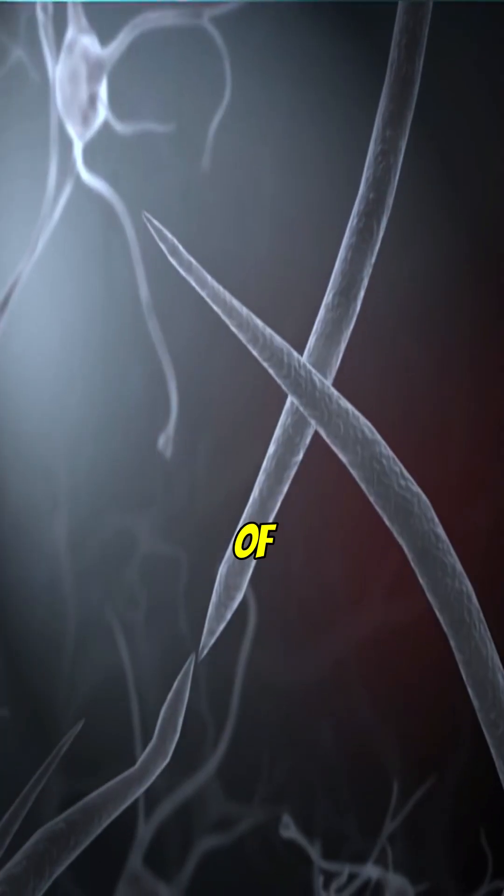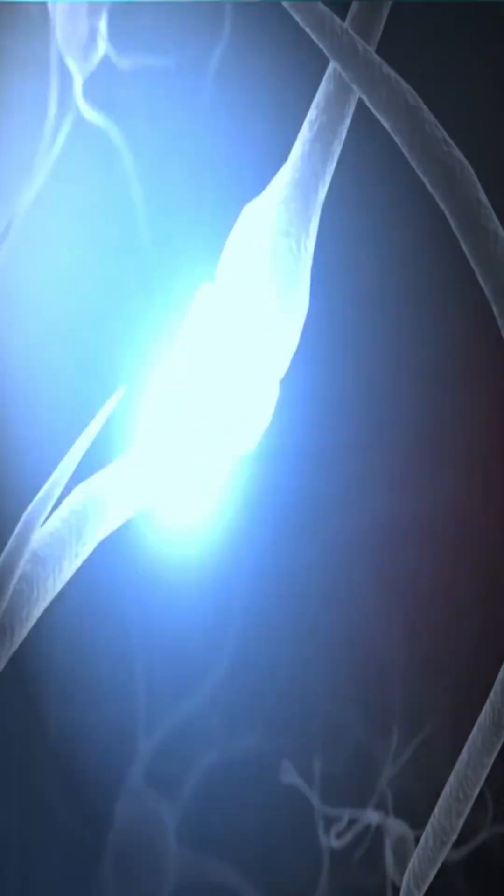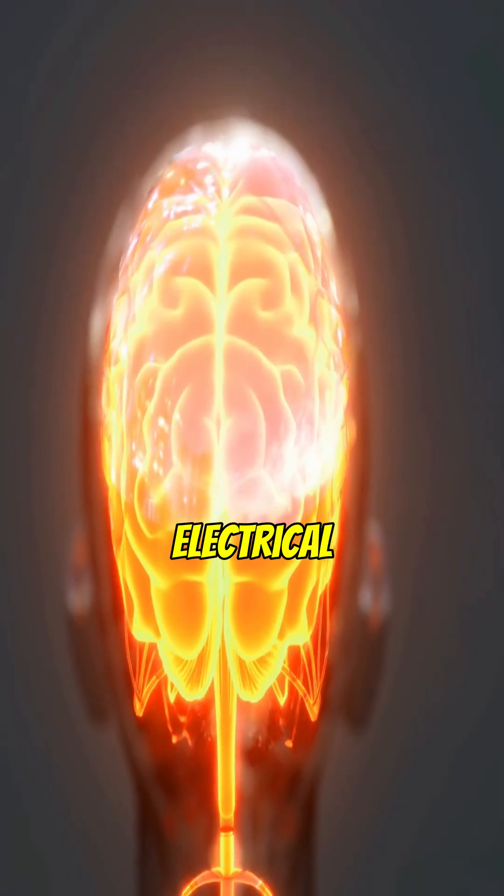The brain is made of neurons, around 86 billion of them. Each one communicates through tiny electrical signals.